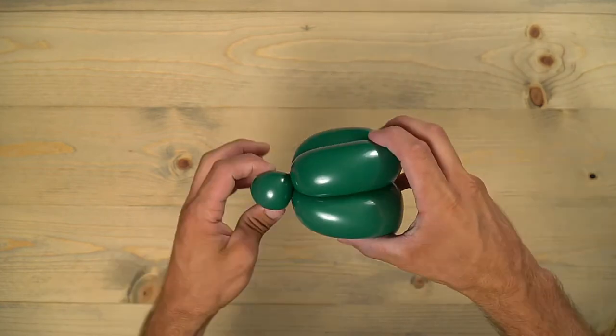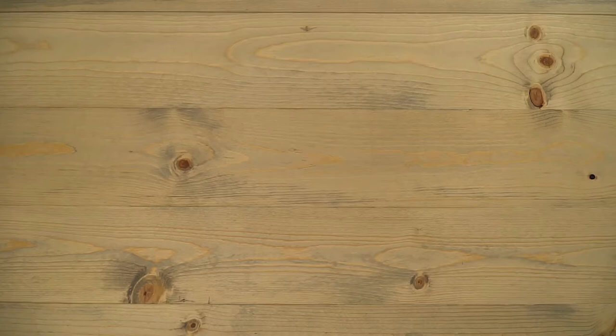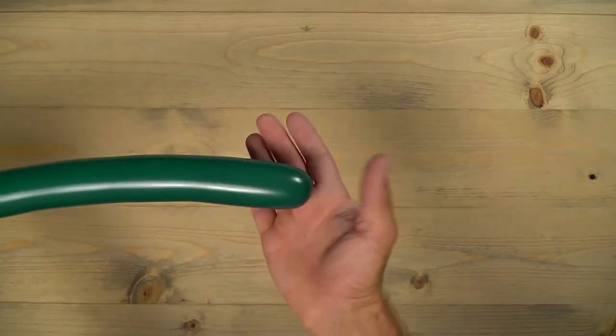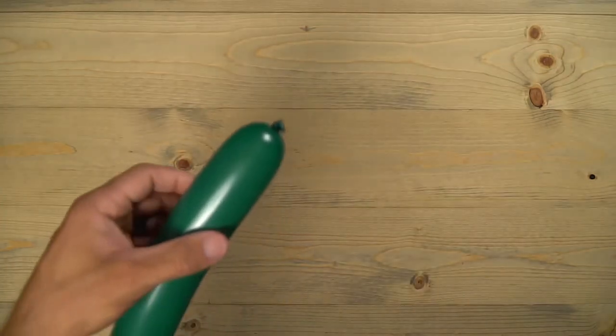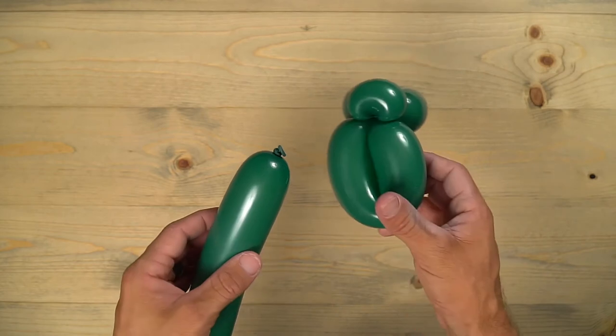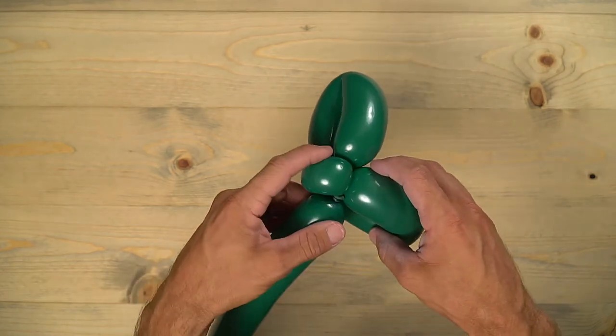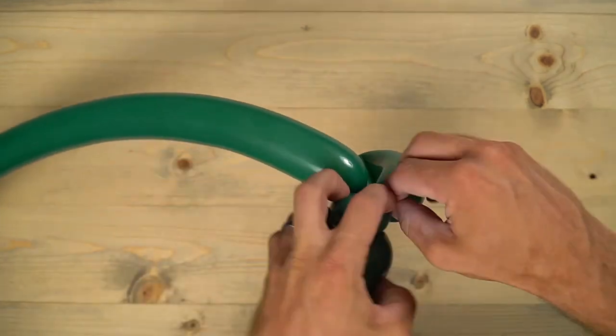That's the mouth there. Grab that next balloon that's blown up all the way. This part's pretty simple; we're just going to add that nozzle end there right up underneath the neck that we made with our pinch twist. So just wrap that in somewhere. Make it nice and secure.